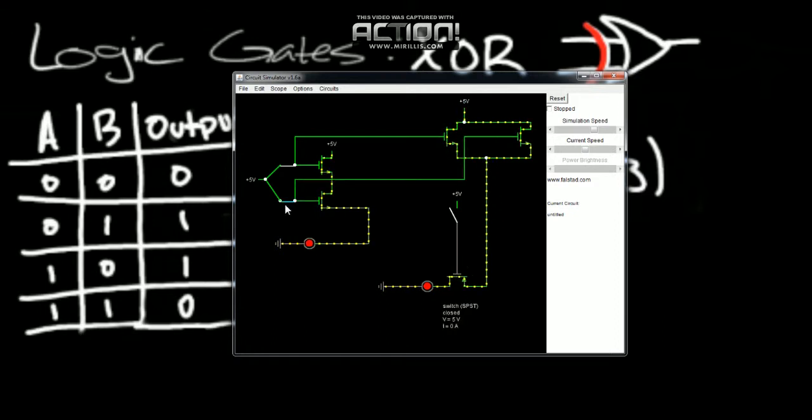And for the fourth case, both are on. So this LED is now on, which means I have to switch this off. Or this switch now needs to be on, and our LED is now off. So our output is false.